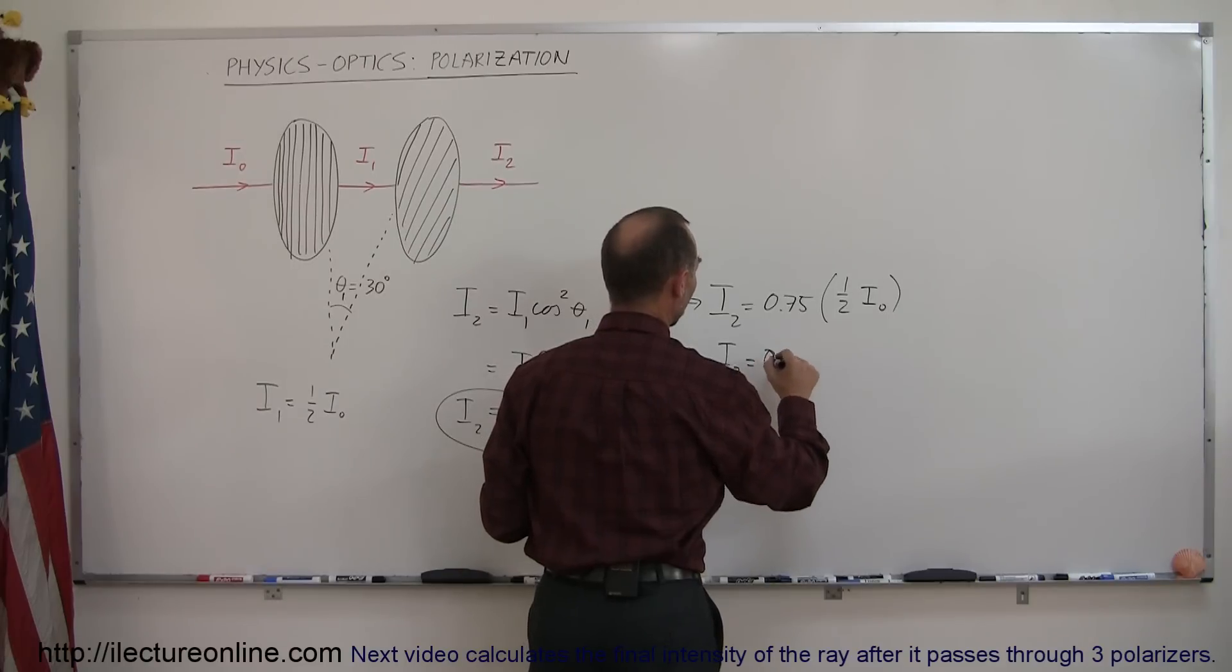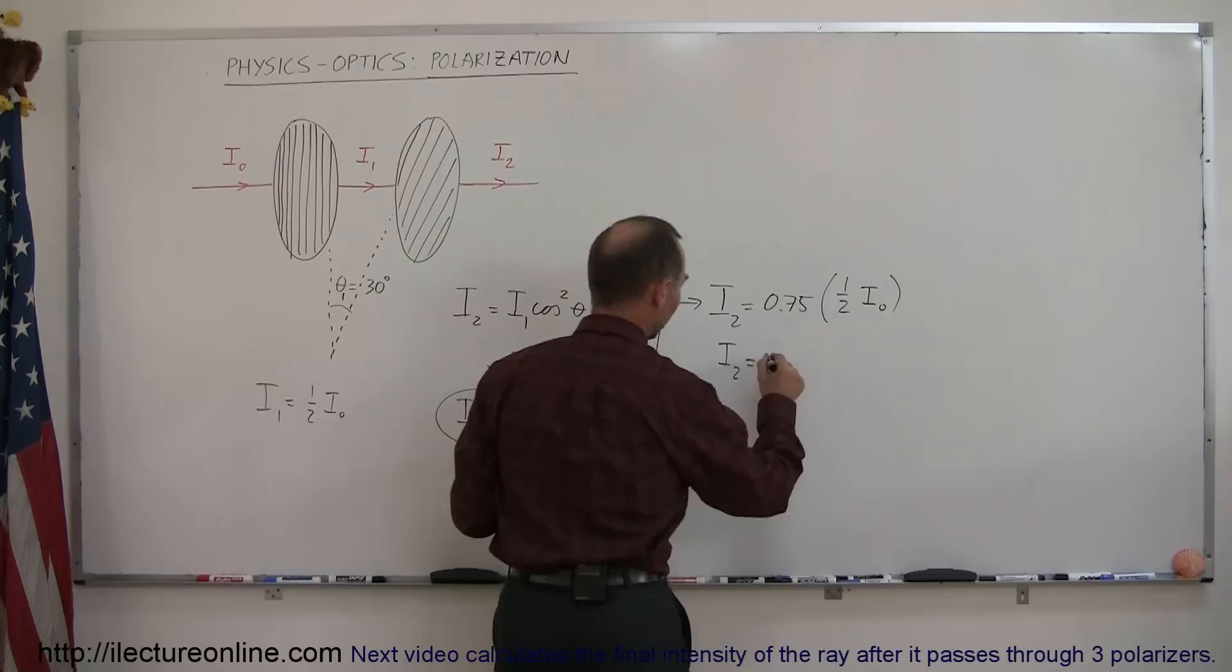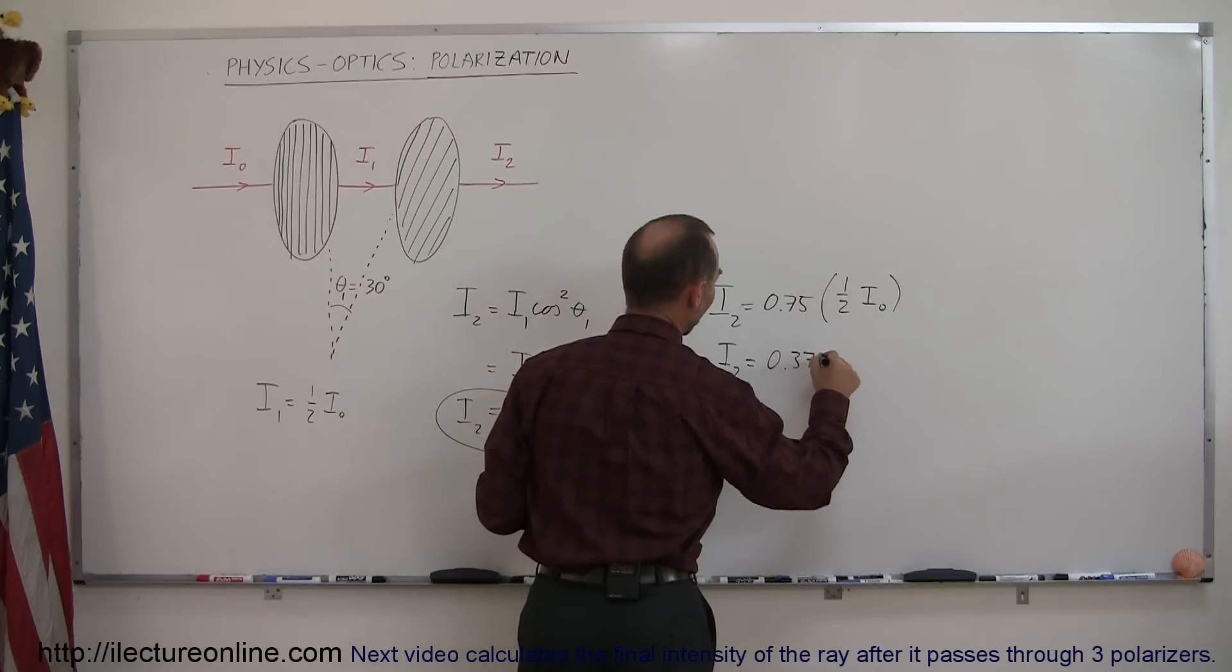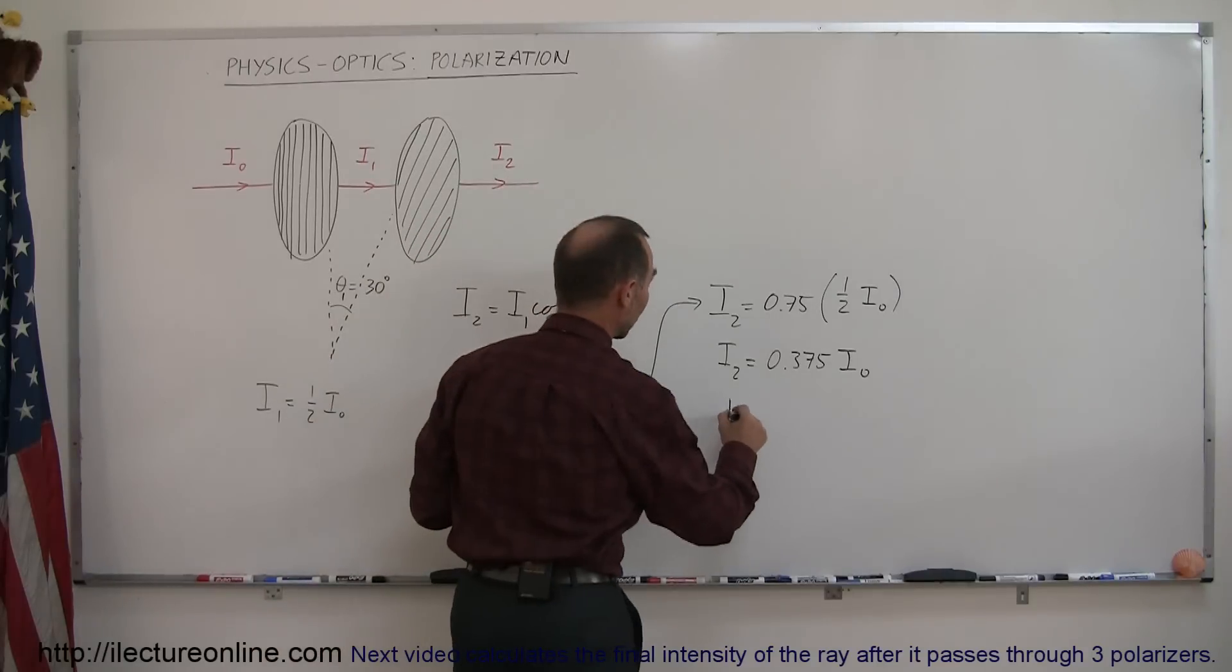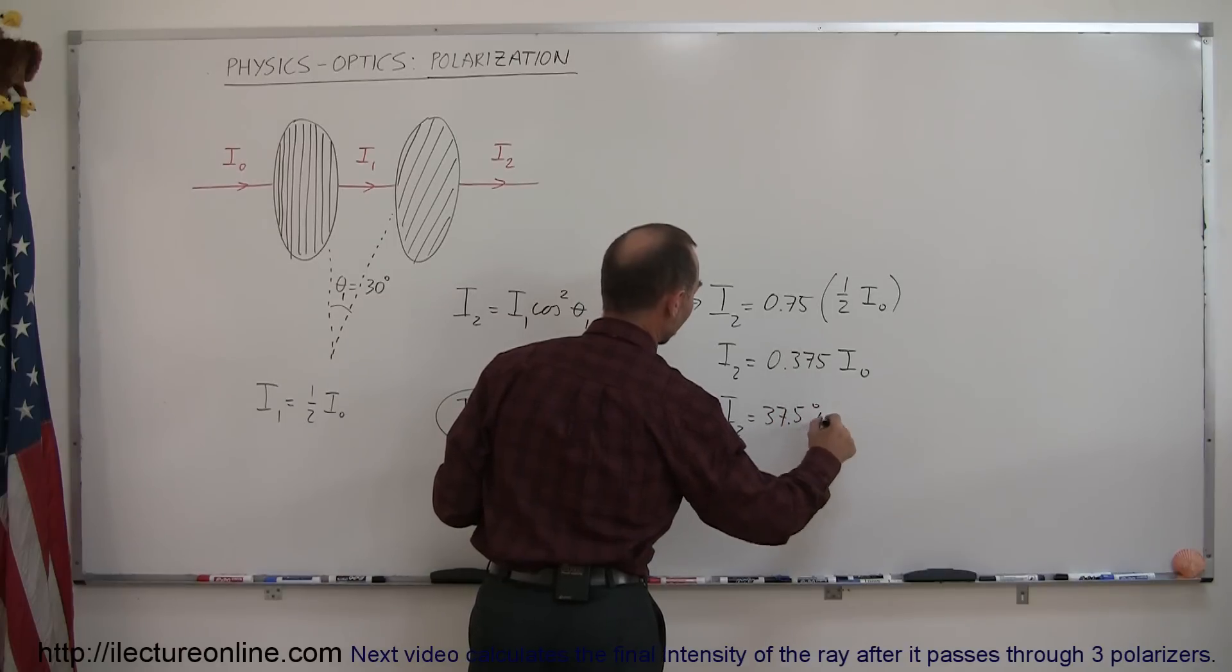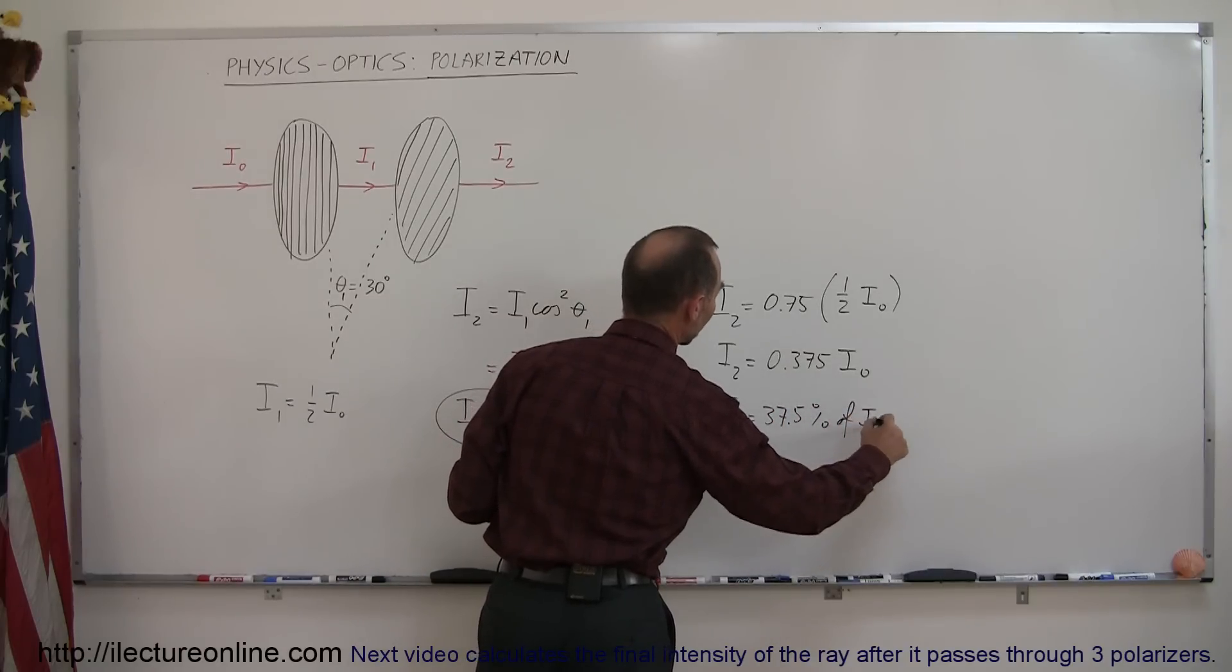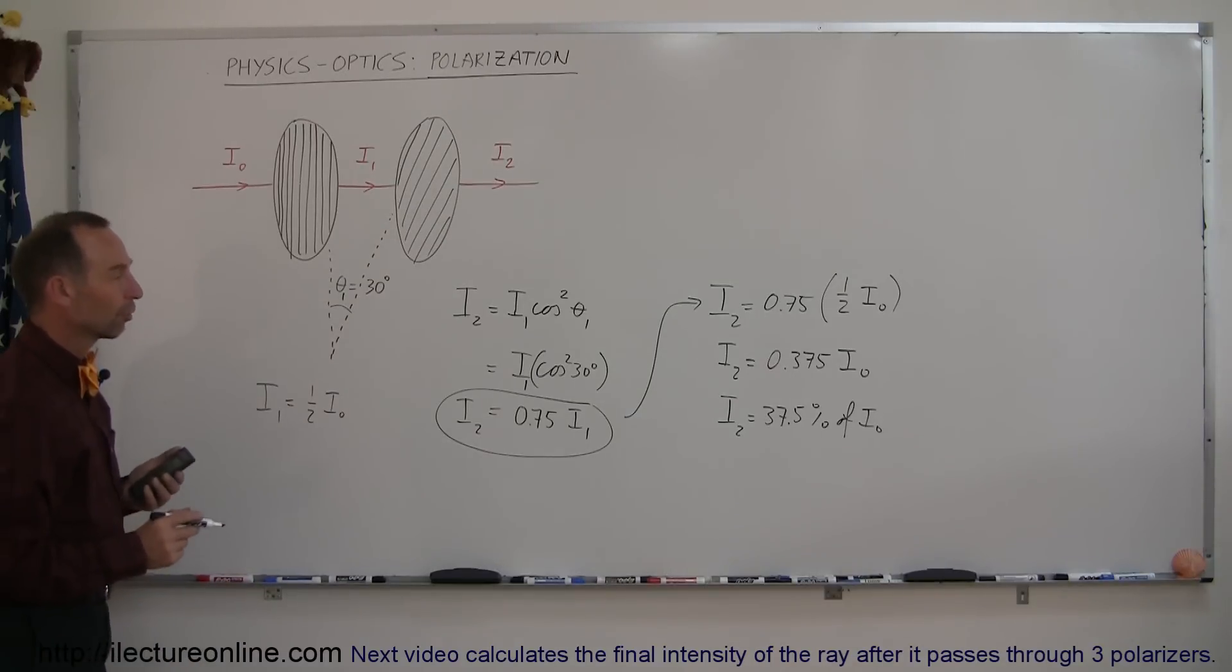is equal to 0.375 times i sub 0. So that would be another way of writing that. We can say that i sub 2 is equal to 37.5% of the original intensity.